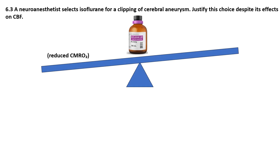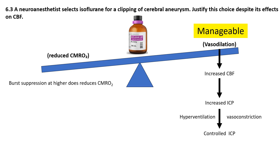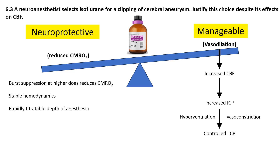A neuroanesthetist selects isoflurane for clipping of a cerebral aneurysm. Justify this choice despite its effects on cerebral blood flow. Isoflurane produces a reduction in cerebral metabolic rate by up to 50% and provides significant neuroprotection that outweighs its cerebral vasodilatory effects. While isoflurane does increase cerebral blood flow, this effect can be counterbalanced through controlled hyperventilation to maintain PaCO2 between 30 to 35 mmHg, which preserves cerebral vasoconstriction and prevents dangerous rises in intracranial pressure. At higher concentrations, isoflurane induces EEG burst suppression, creating additional neuroprotection by dramatically reducing neuronal metabolic demand during temporary vessel occlusion. These properties, combined with predictable hemodynamic effects and ability to rapidly titrate anesthetic depth, make isoflurane a good choice in neuroanesthesia.